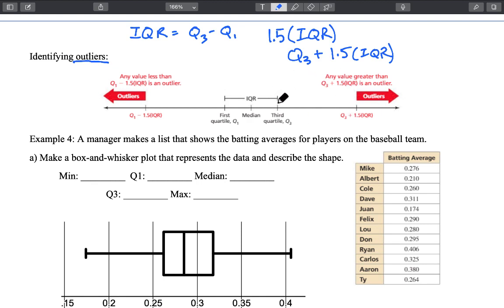We're going to say Q3 plus one and a half times that IQR and then that's going to give us this upper bound and anything outside or greater than that value is going to be considered an outlier.